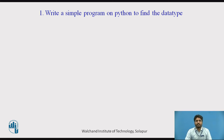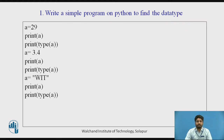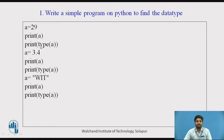First program: write a simple program on Python to find the data type. I have taken a equal to 29, print a — the output will be 29. And print, what is the type of a? So a is integer. If you want to find the data type of a, the function would be print(type(a)).